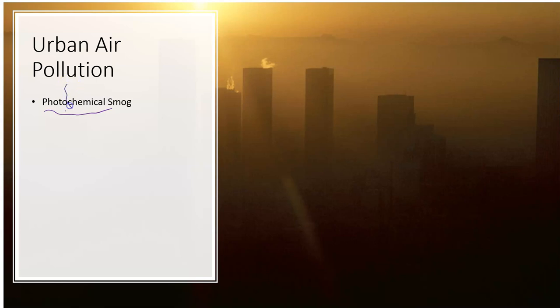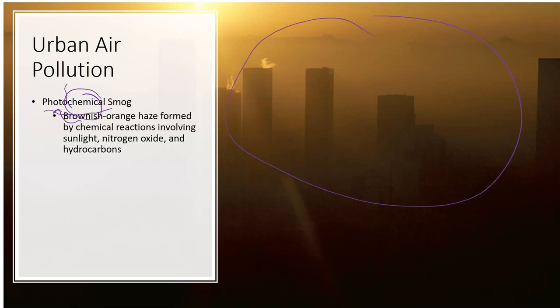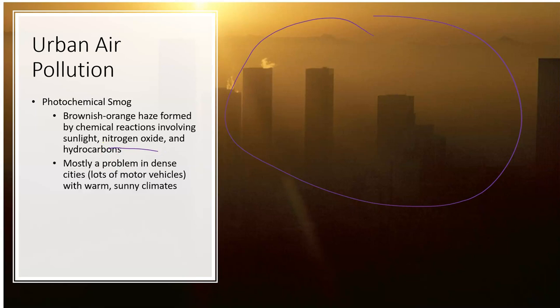Photochemical smog is very different from that traditional type of smog. Basically, what we're talking about is a chemical reaction in the atmosphere that is catalyzed by sunlight to create this orangish-brown haze — this is a picture of Los Angeles, by the way. It's a brownish-orange haze formed by chemical reactions involving sunlight, nitrogen oxides, and hydrocarbons. Nitrogen oxides would be a primary pollutant in that case.